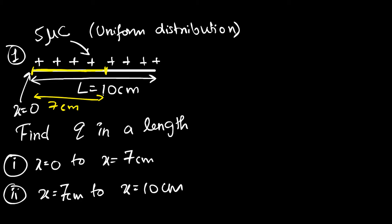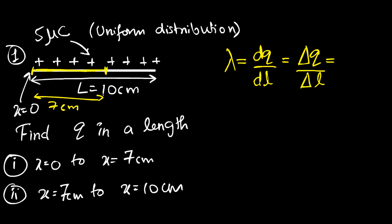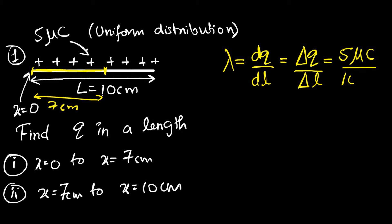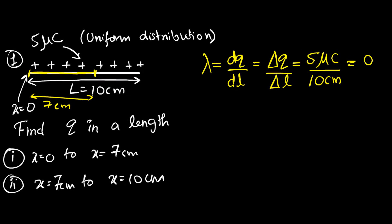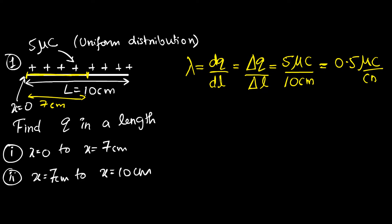The first thing I'm going to do is calculate the linear charge density. You don't really need to calculate that, but since we introduced charge density last time, let's go ahead. Charge density is defined as dq divided by dl. But here we're dealing with a uniform charge distribution, so the crowdedness is the same everywhere. I can use macroscopic quantities: λ = ΔQ / Δl = 5 microcoulombs / 10 centimeters, which gives us λ = 0.5 microcoulombs per centimeter.